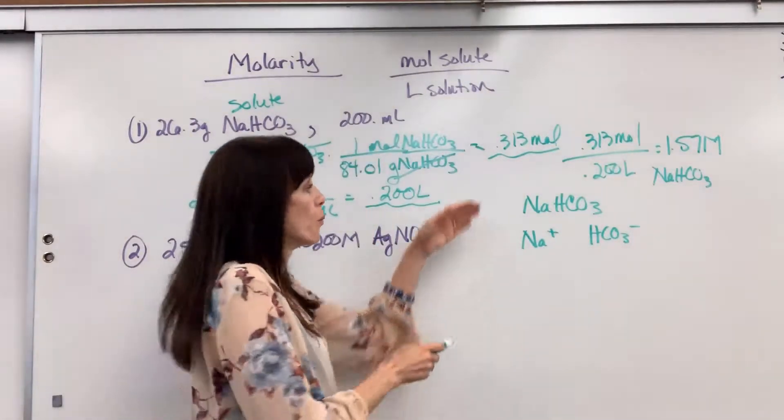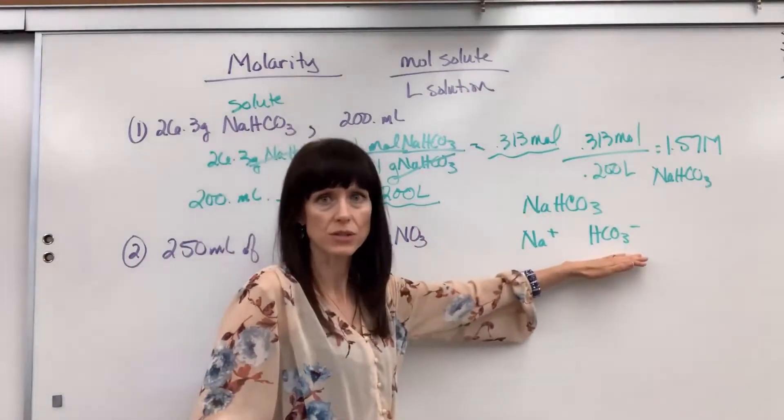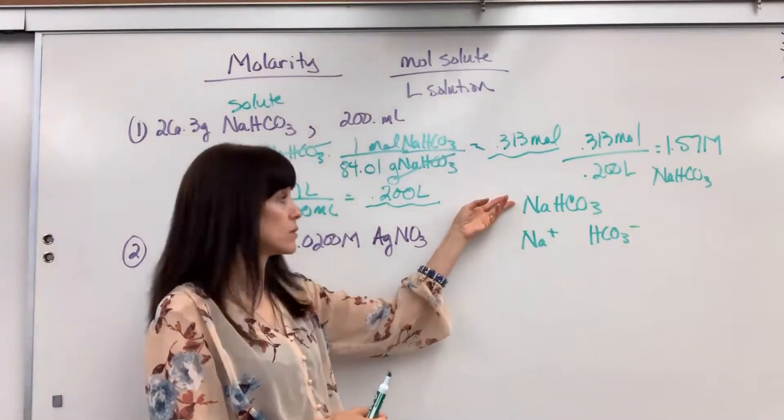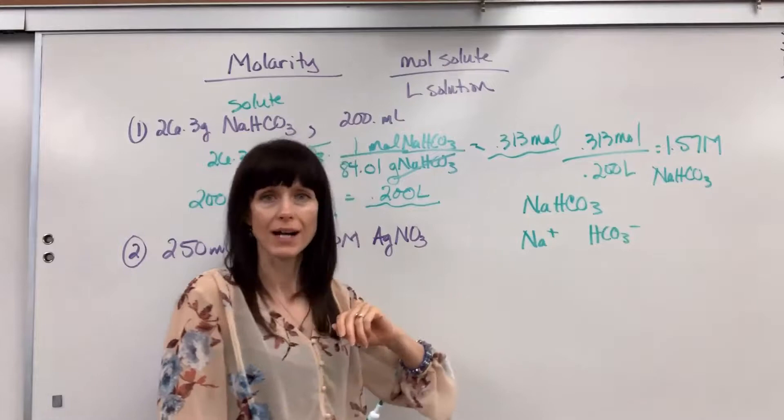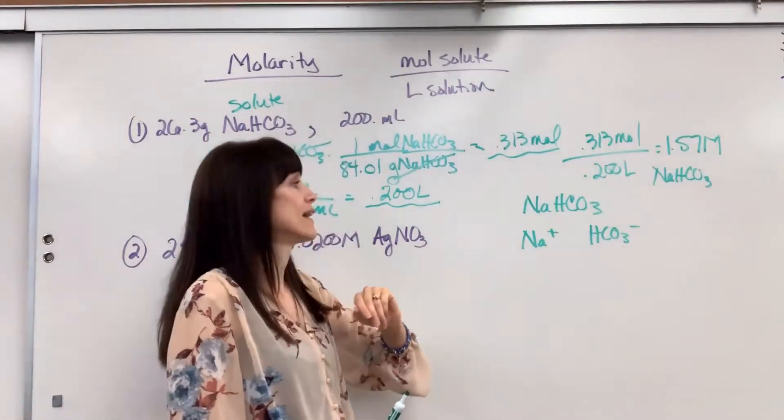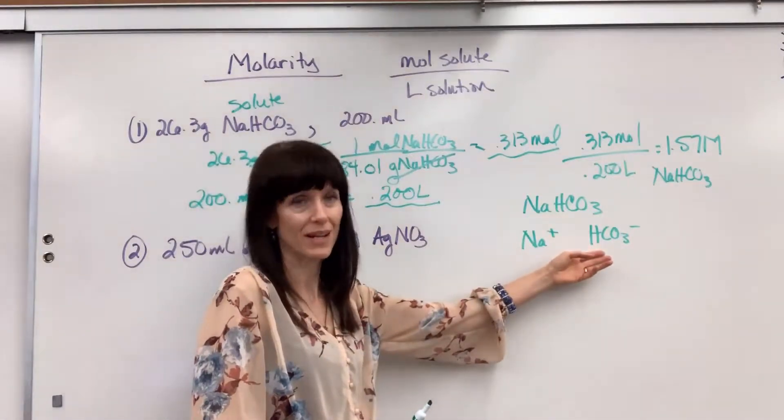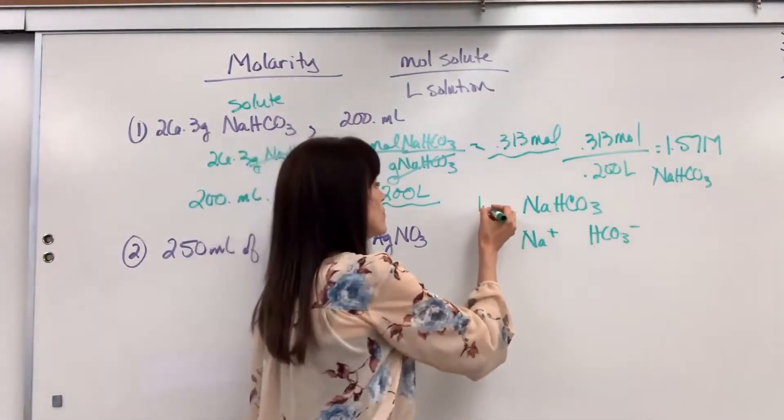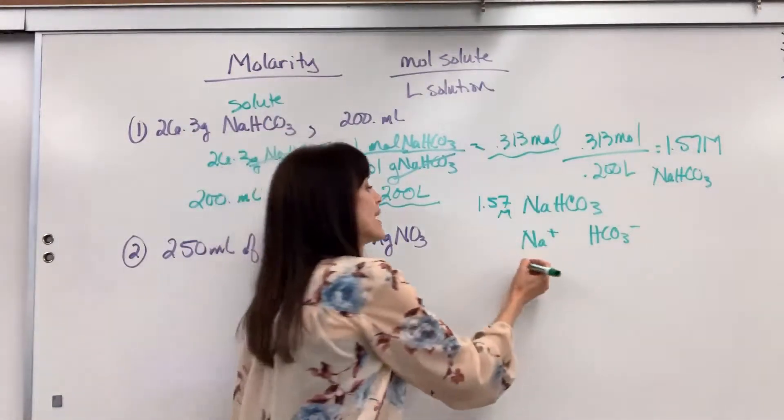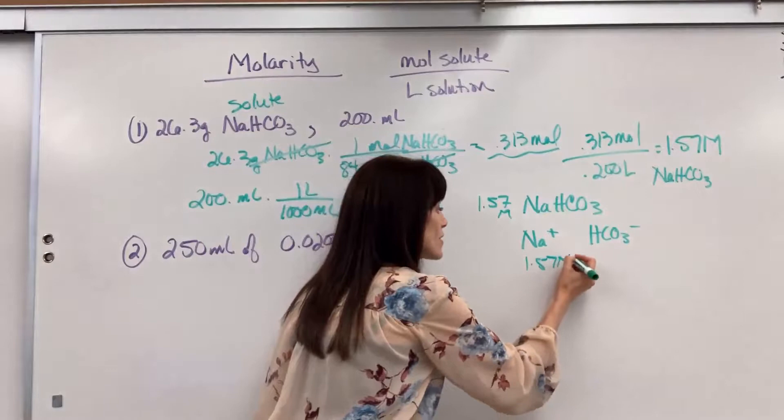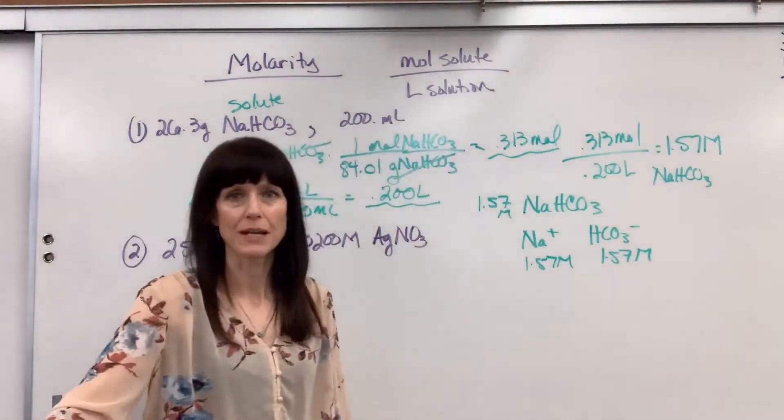Look at this ratio. One compound produces one sodium, one hydrogen carbonate. If I had two of those, two of this sodium hydrogen carbonate, I'd have two sodium and two hydrogen carbonate. If I had one mole, I'd have one mole of sodium, one mole of hydrogen carbonate. If I have 1.57 molar sodium hydrogen carbonate, it means I have 1.57 molar sodium ion and 1.57 molar hydrogen carbonate.